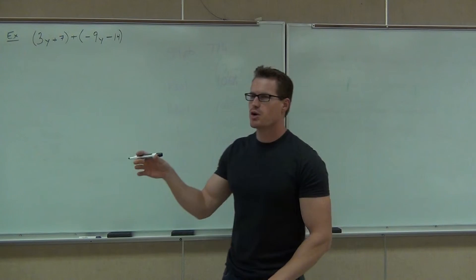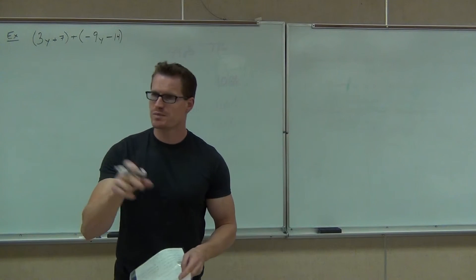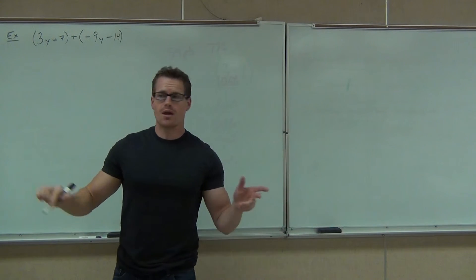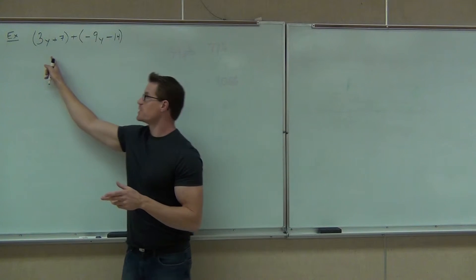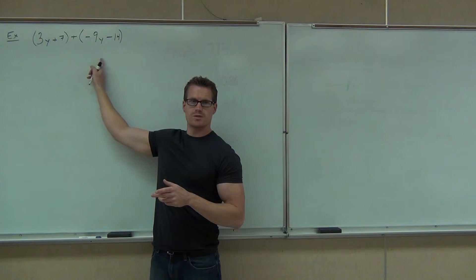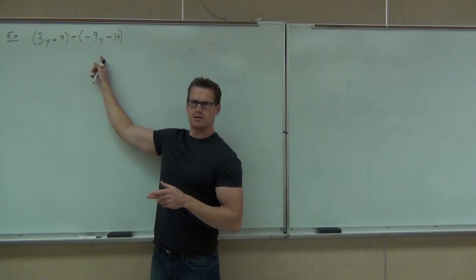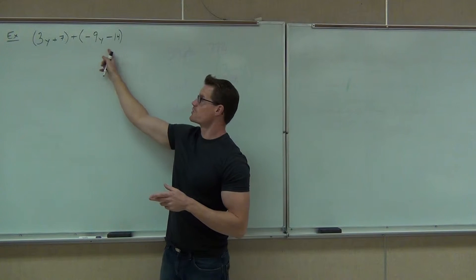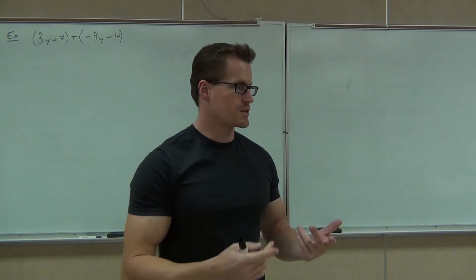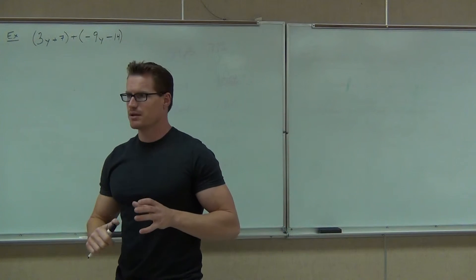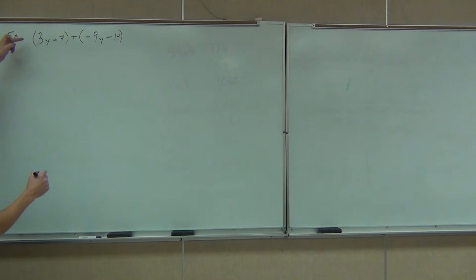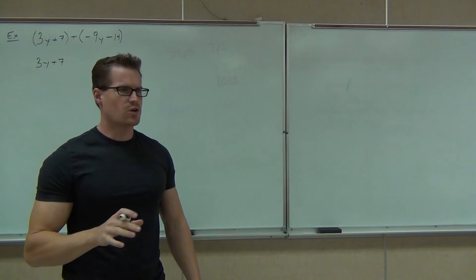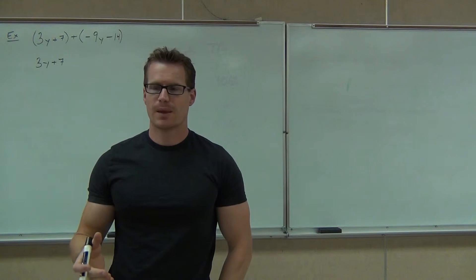Okay, so we're continuing to add and subtract some polynomials. Again, polynomials just mean some expressions that have terms being added or subtracted. So a little refresher. This is our first polynomial. How many terms are right here? Two. And how many terms are right here? Two. What's the first term in this polynomial? Negative 9y. And the coefficient would be negative 9. This term would be our negative 14. Our idea was somehow get rid of the parentheses. If you have numbers to distribute, you'll be distributing. Here we don't. And then combine like terms.